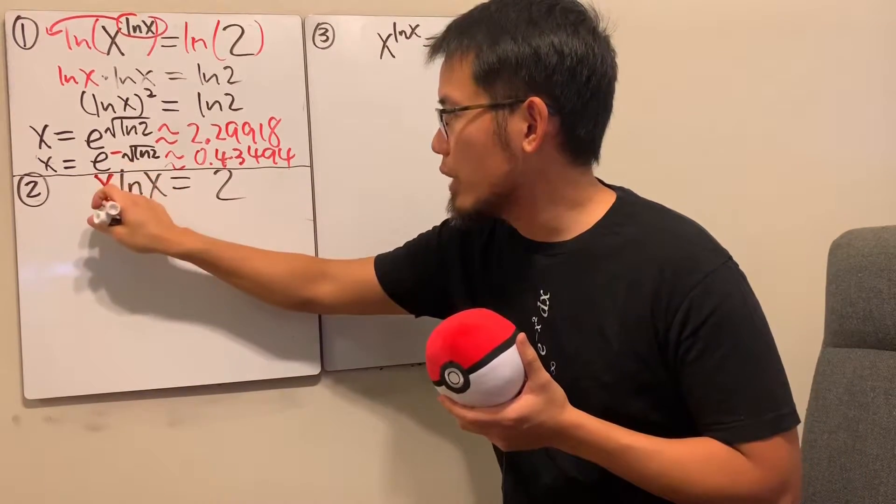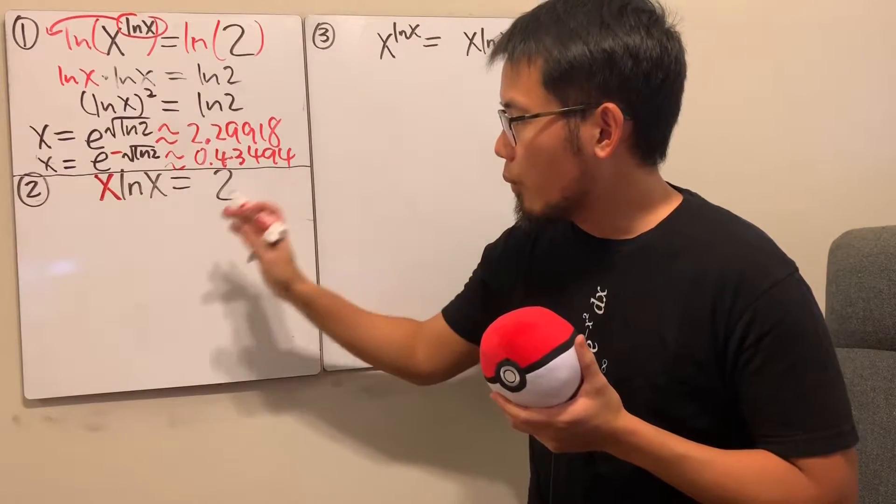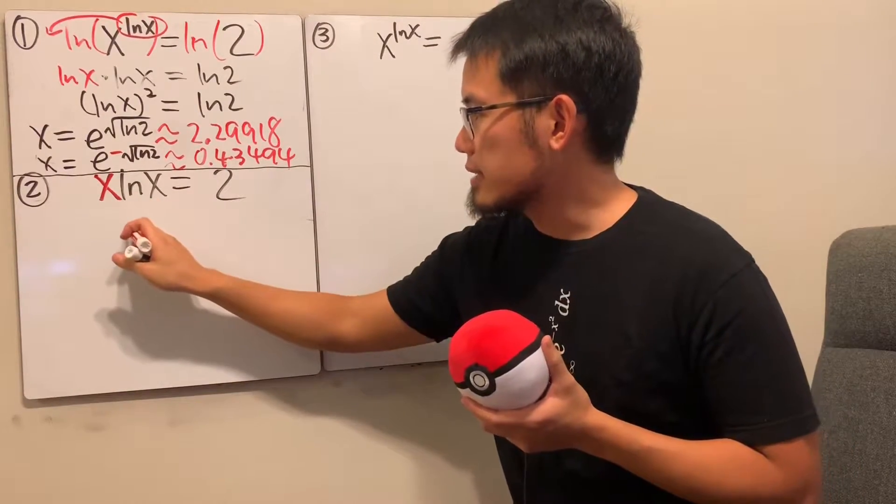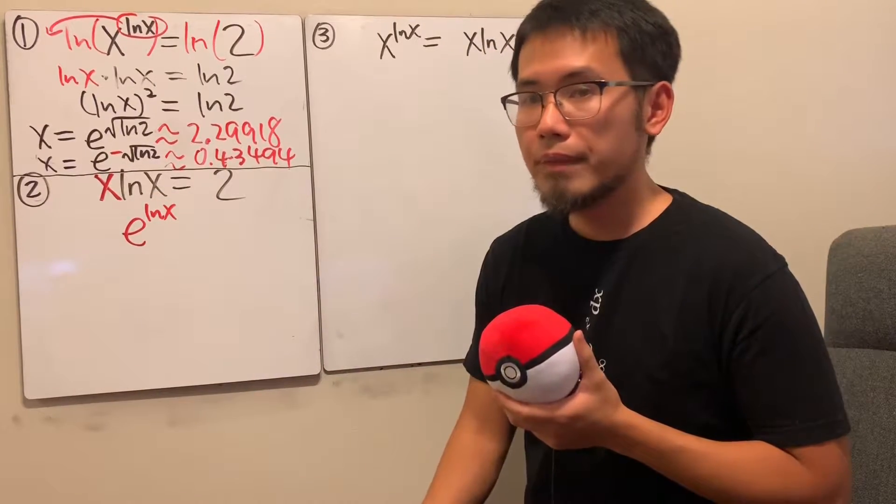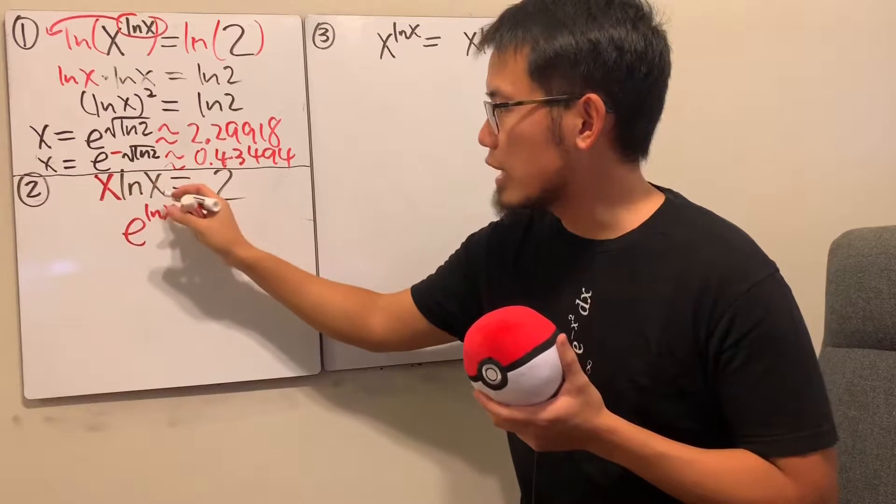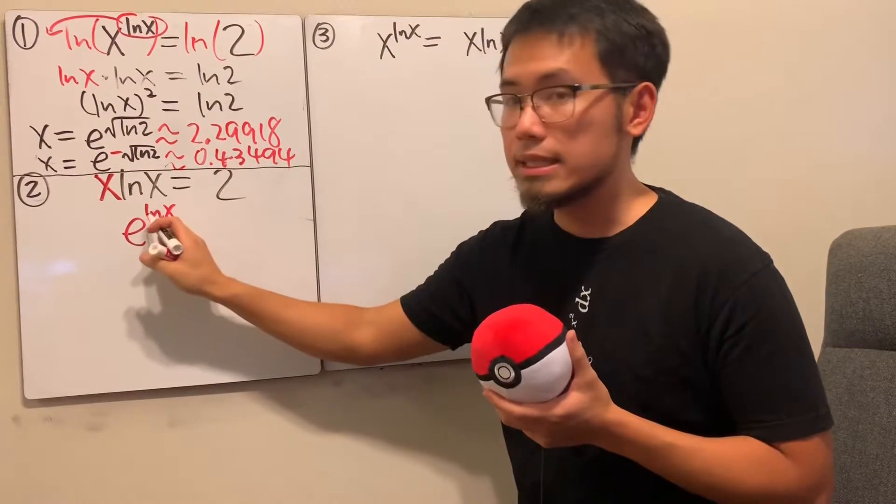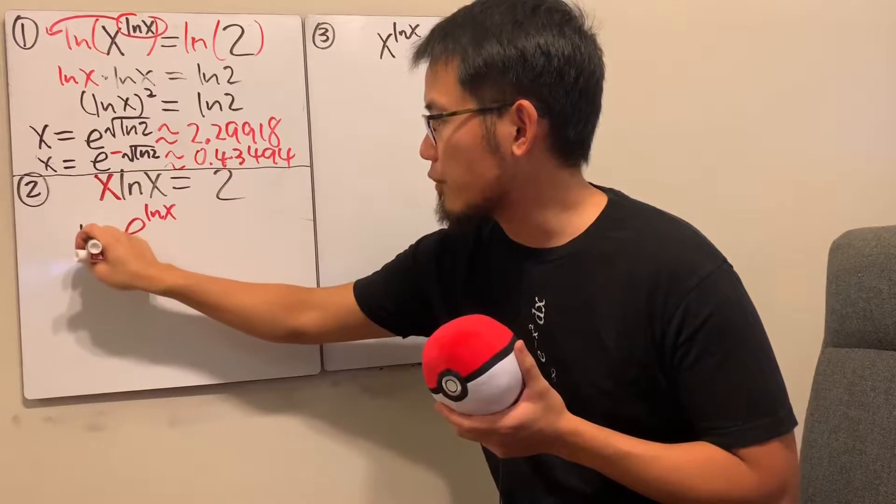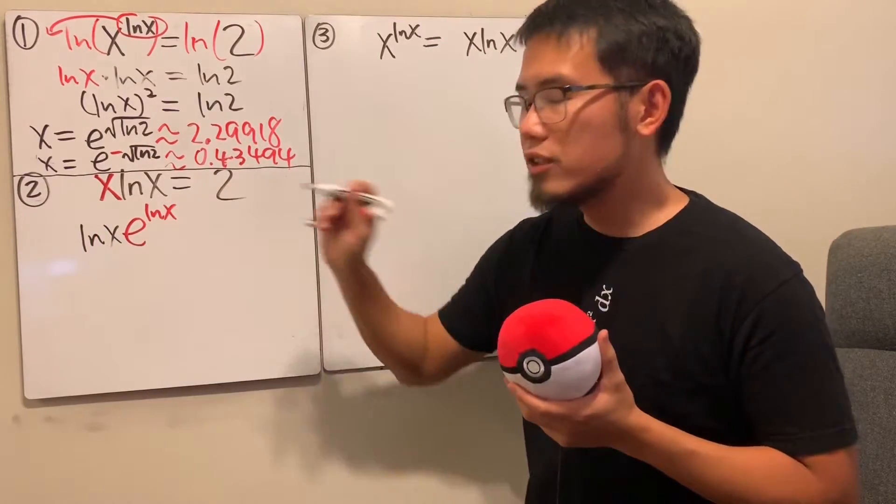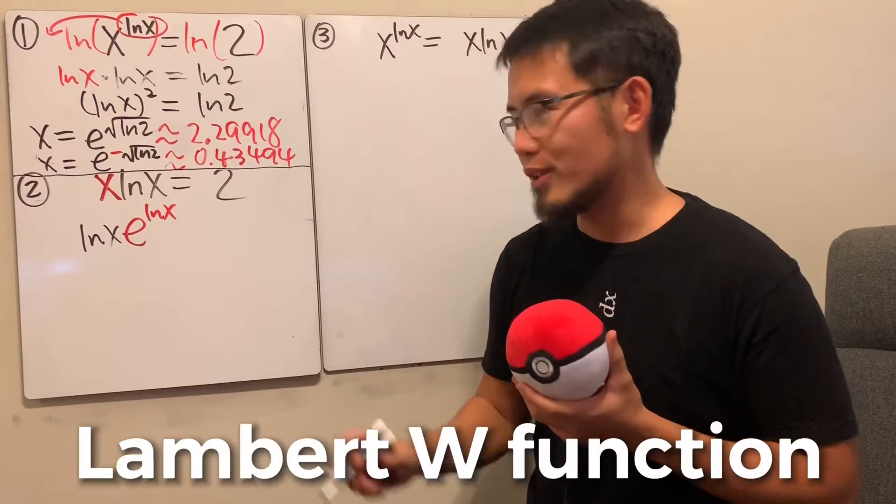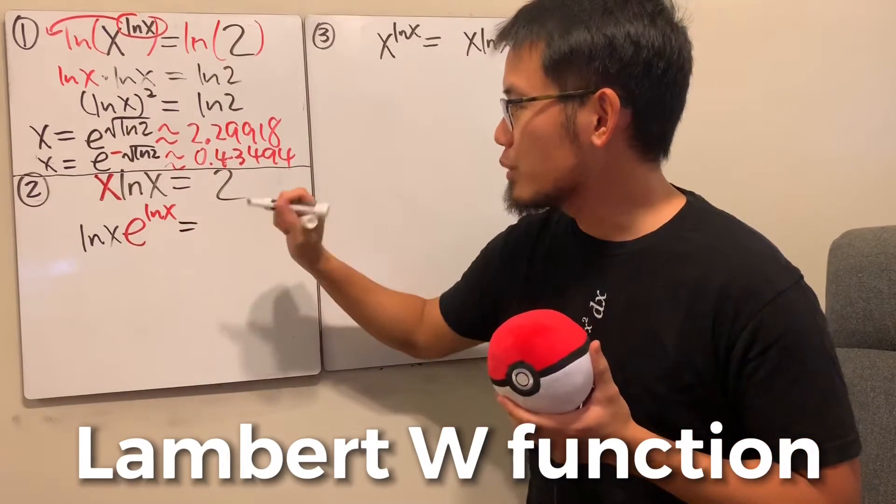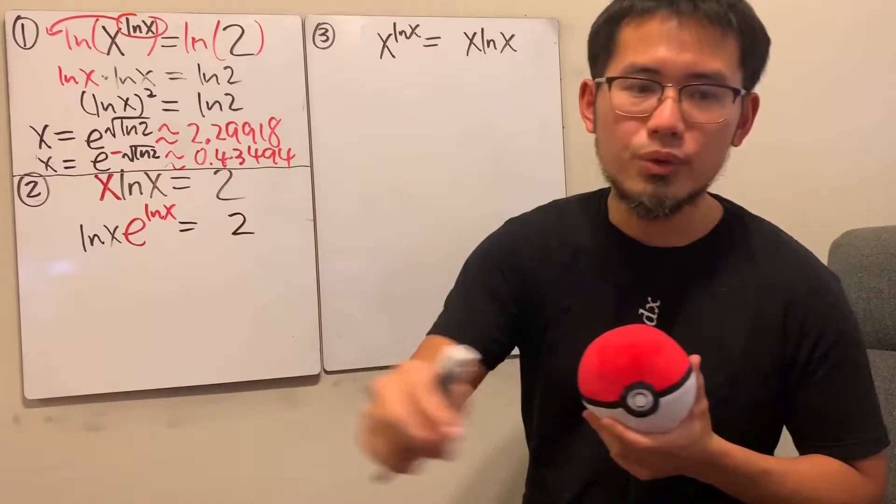Have a look. We have the x right here, right? What we are going to do is, we can look at the x as e to the natural log of x power. And then notice that we still have this natural log of x. That's multiplying with this, which I will just put that in the front line. And now this is actually very beautiful, because we can use what we call the Lambert W function to help us with that. So you see, this right here is equal to 2. That's great.